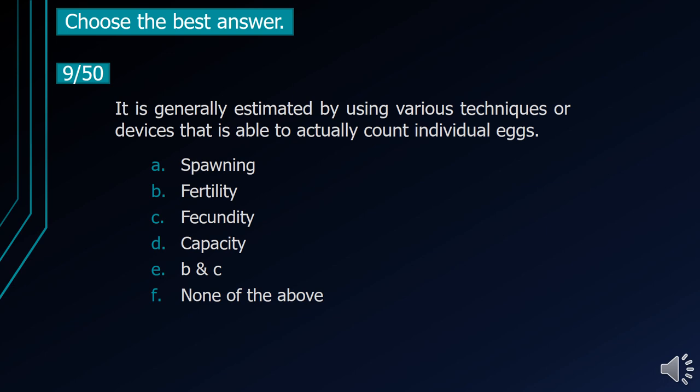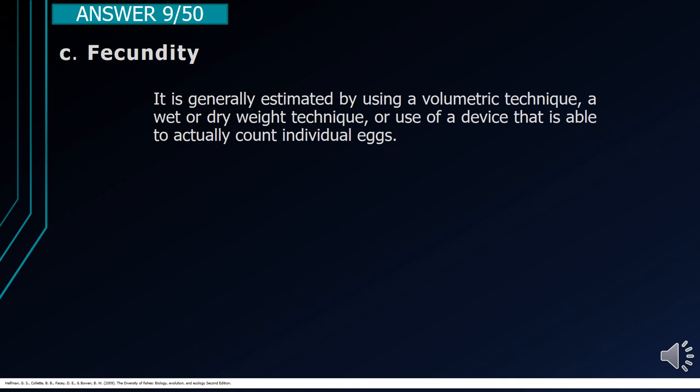Number 9. It is generally estimated by using various techniques or devices that are able to actually count individual eggs. A. Spawning. B. Fertility. C. Fecundity. D. Capacity. E. B and C. F. None of the above. The correct answer is letter C, Fecundity. It is generally estimated by using a volumetric technique, a wet or dry weight technique, or use of a device that is able to actually count individual eggs.